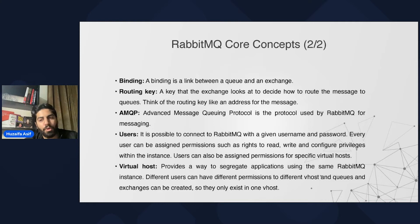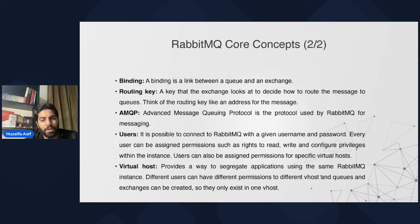AMQP is the basic protocol that RabbitMQ uses for messaging. Users have a username and password to connect to RabbitMQ, and we can assign different roles, permissions, and privileges to different users. There is also the concept of a virtual host: virtual hosts provide a way to segregate applications using the same RabbitMQ instance, where different users can have different permissions to different virtual hosts, and queues and exchanges can be created within them.